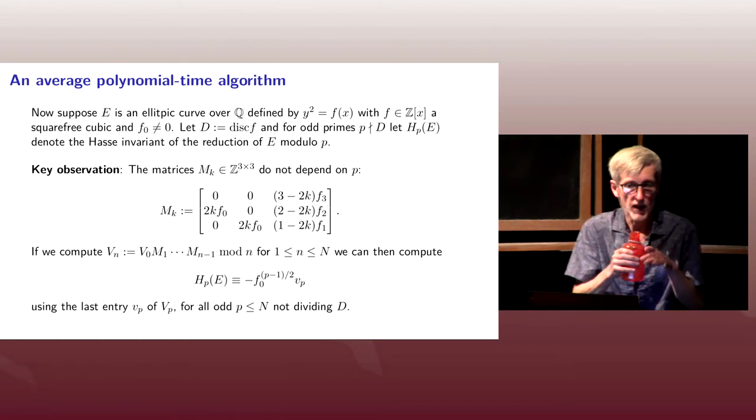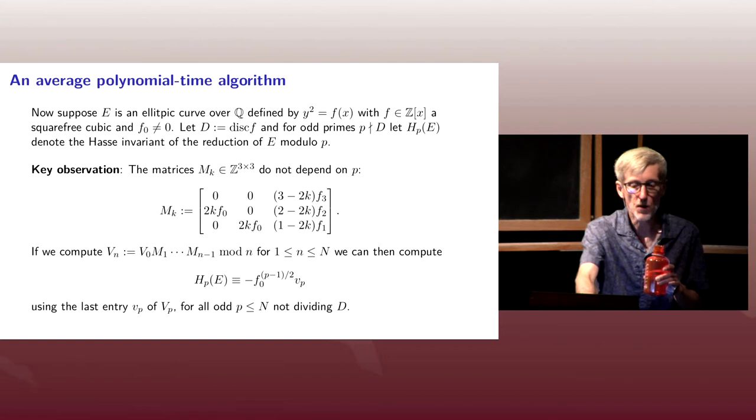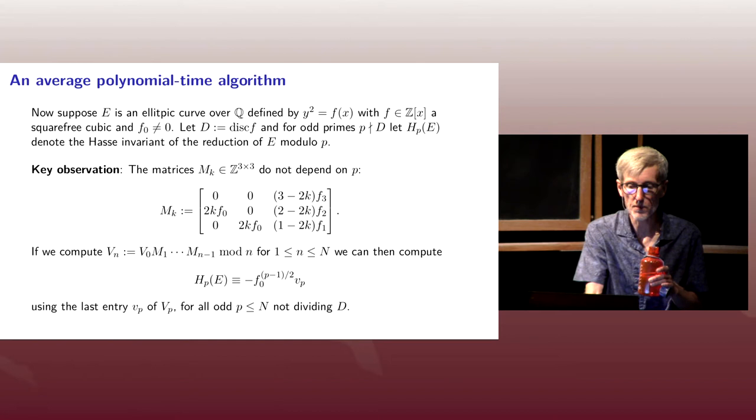So how do we do this efficiently? And we don't want to compute these products for every N, right? We don't want to compute N products of roughly N things because that would give us something with a running time that's quadratic in our bound N.